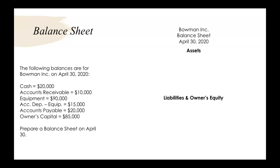In this example, the following balances are for Bowman Inc. on April 30th, 2020. We have cash, accounts receivable, equipment, accumulated depreciation on equipment, accounts payable, and owner's capital. And we need to prepare a balance sheet on April 30th.